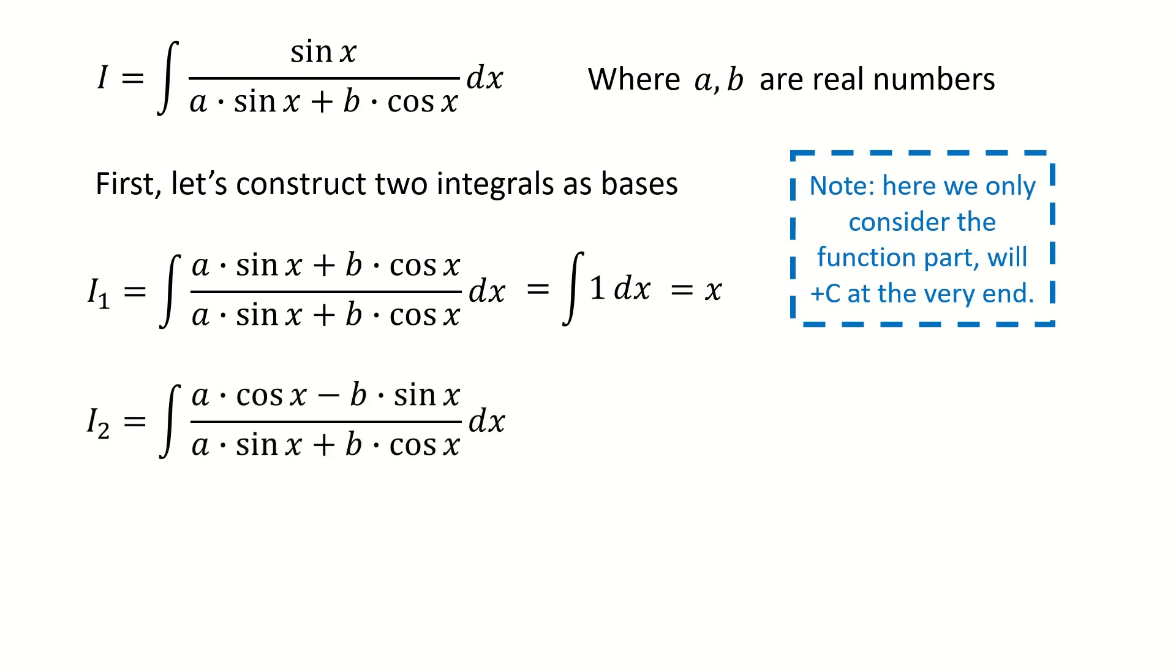And the second base is i2, and we construct it in this way. You may ask why we do it in this way, and you will see the reason very soon.